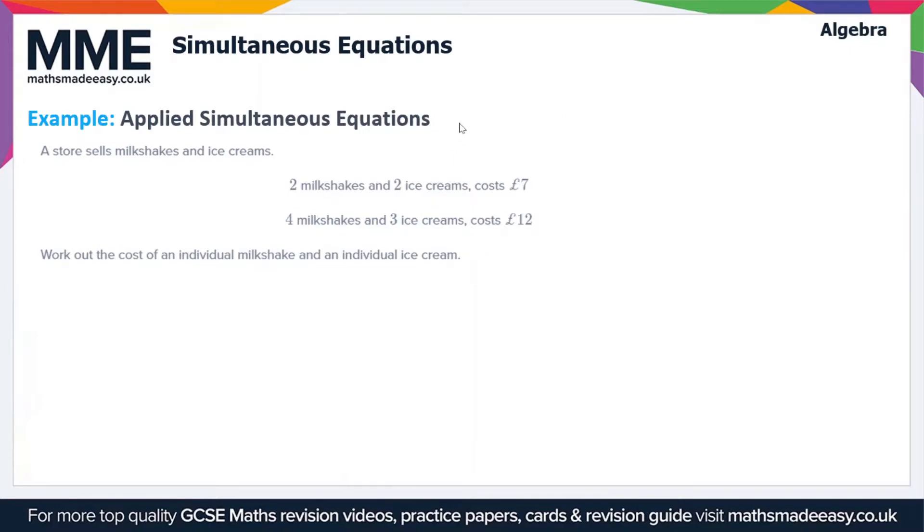Two milkshakes and two ice creams cost £7. Let's set this up as 2m plus 2i, so m for milkshake, i for ice cream, equals 7. And likewise we'll do the same for this equation. So 4m plus 3i equals 12.